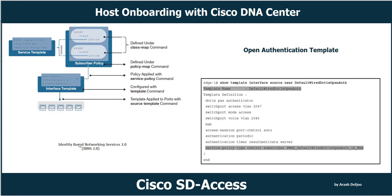This is phase one of Identity Based Networking Services version 2. IBNS v2 makes use of class maps and policy maps, similar to Quality of Service. The policy map contains the actions to be performed when an event is triggered, and the template is attached to the interface configuration, similar to the modular QoS CLI (MQC).